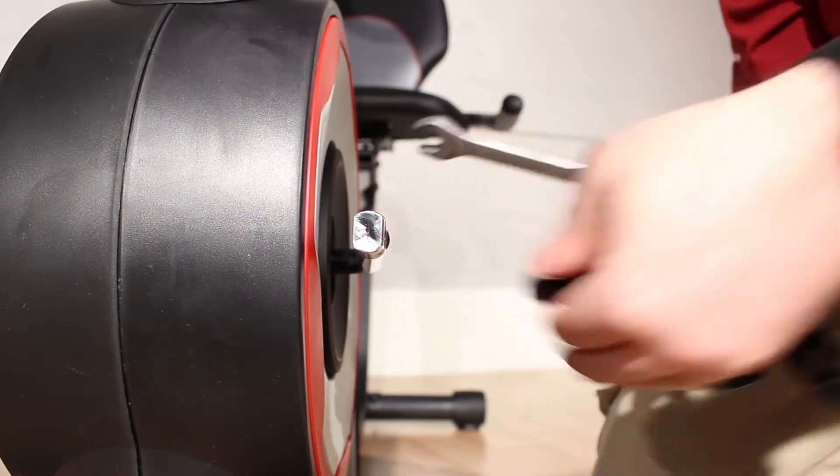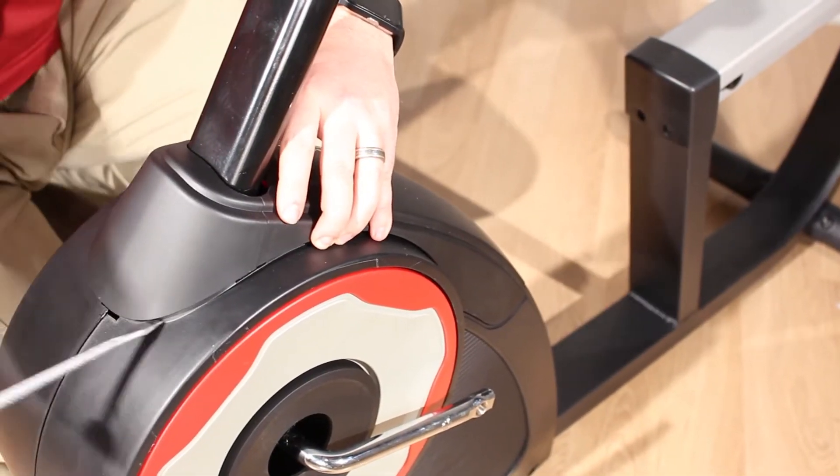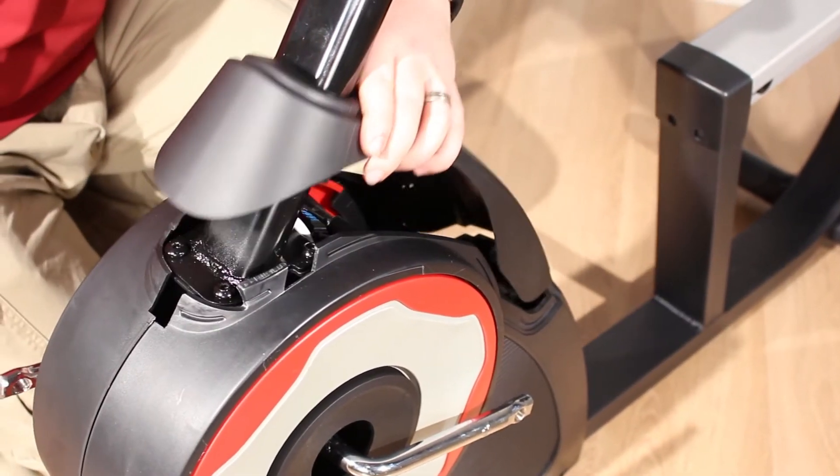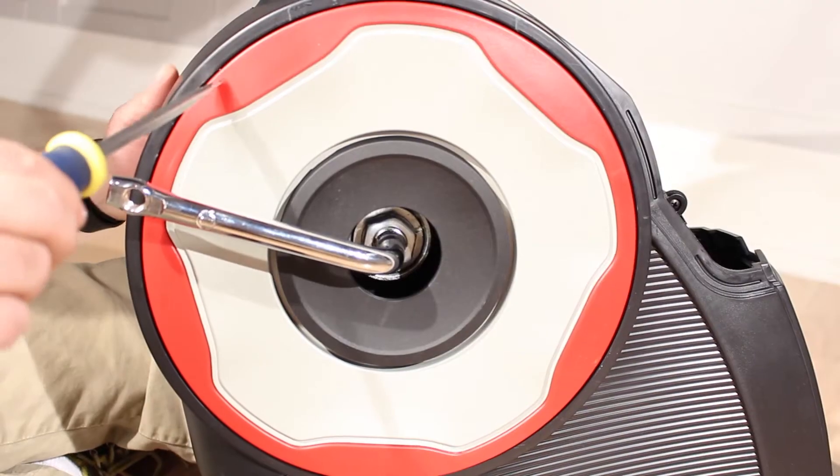Using a flathead screwdriver with a thin tip, pop the upright cover loose and then slide it up the upright out of the way.